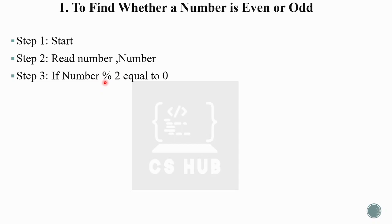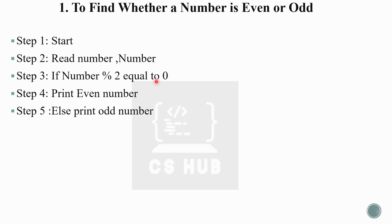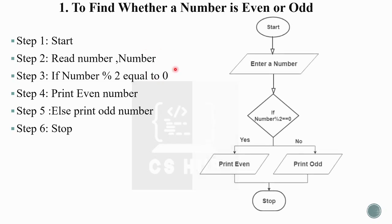So we divide the number and check the remainder. If the remainder is equal to 0, we print it as an even number; otherwise, we print it as an odd number. Stop. The flowchart starts here.